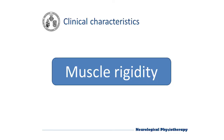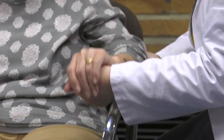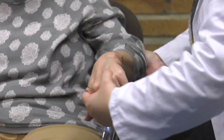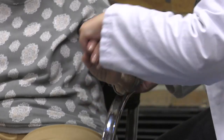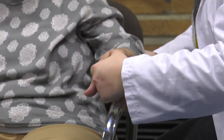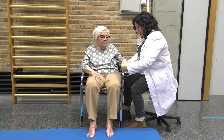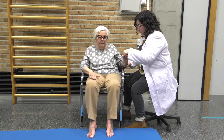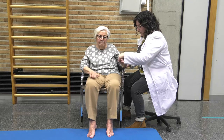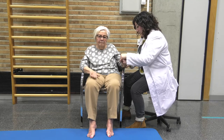Muscle rigidity is another characteristic sign in Parkinson's disease and it is defined as resistance to non-speed-dependent movement. We first feel muscle tone and then explore passive mobility. We can make circular movements or simply passively perform wrist flexion and extension. If we do not notice any resistance after a few seconds of passive movement, we can activate the resistance by asking the patient to voluntarily move the hand that we are not assessing.